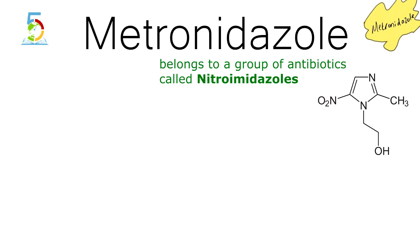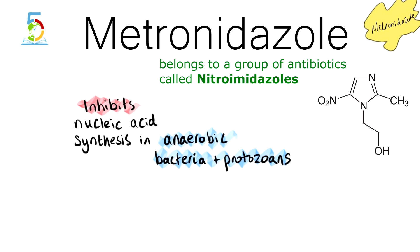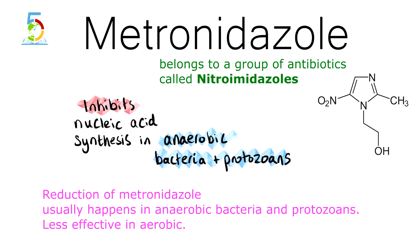The way that metronidazole works is by inhibiting nucleic acid synthesis by disrupting the DNA of microbial cells. This effect only happens when metronidazole is partially reduced, and this reduction usually happens only in anaerobic bacteria and protozoans. Therefore, it has very little effect on human cells, which are aerobic, and on aerobic bacteria.